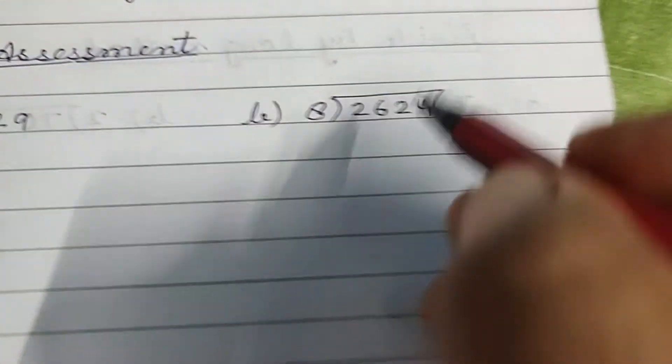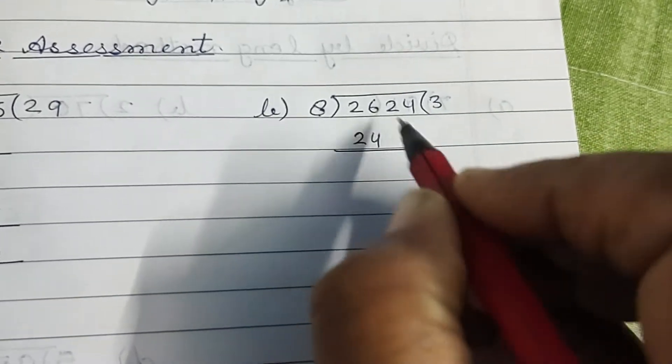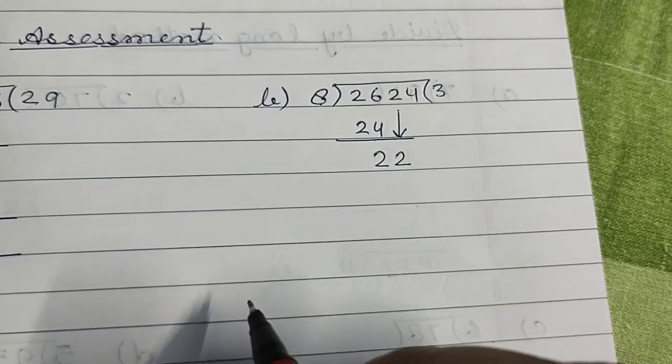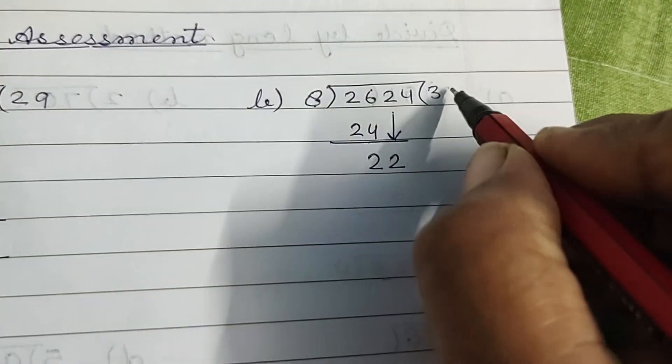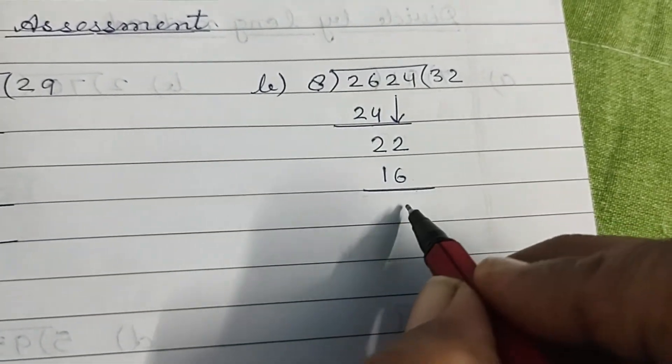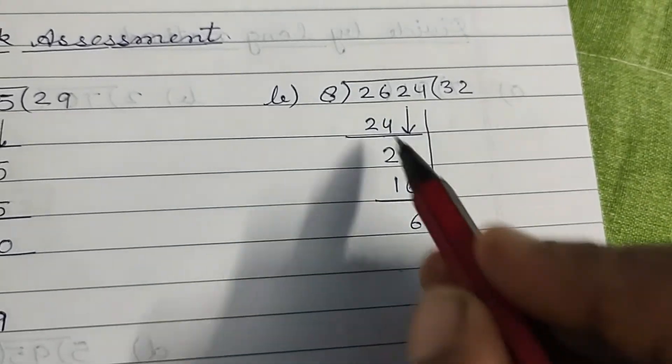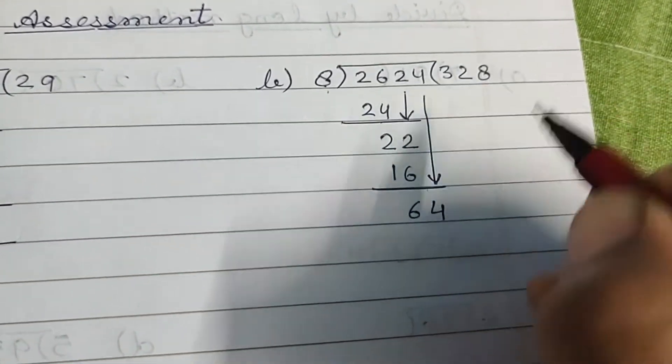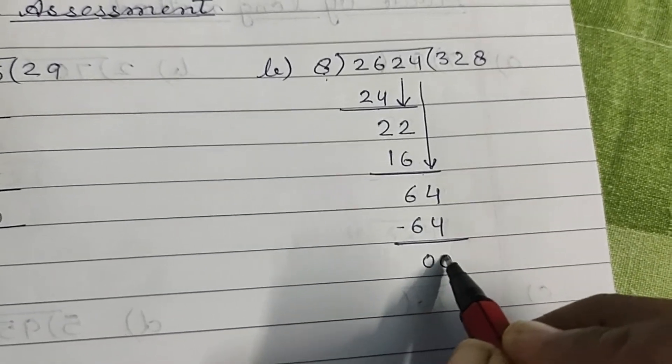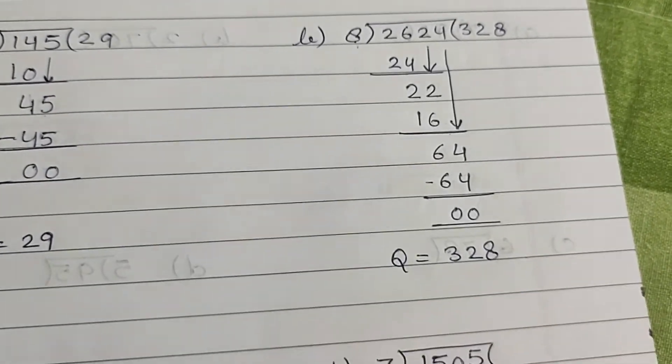Then 8. 3×8, 24. 26 minus 24, 2. Bring this 2 down, ho jayega 22. Then 8, 2×8, 16. 22 minus 16, 6. Bring 4 down, 64. 8×8, 64. 64 minus 64, 0. Quotient 328.